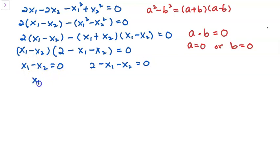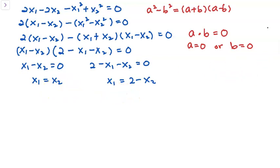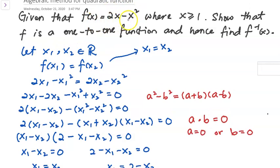From the first equation, I get x1 equals x2. From the second equation, I get x1 equals 2 minus x2. The question restricted the domain to x greater than or equal to 1. Originally a quadratic function is never a one-to-one function, but restricting the domain can make it one-to-one. Now I need to check which answer is valid for the given domain x ≥ 1.